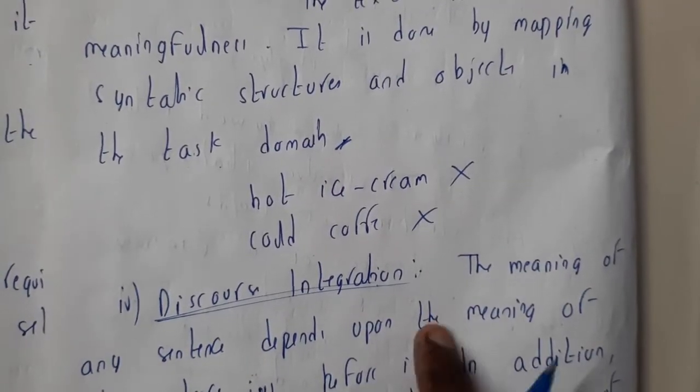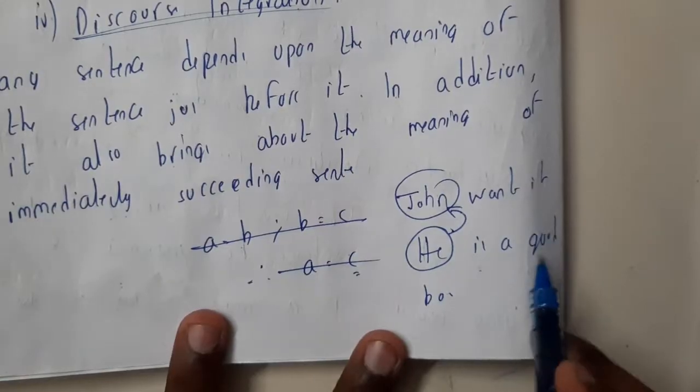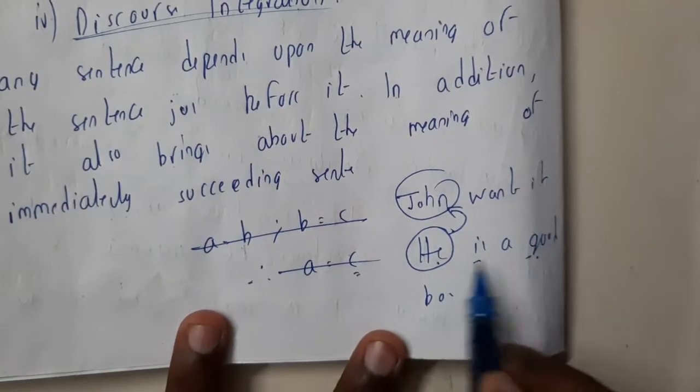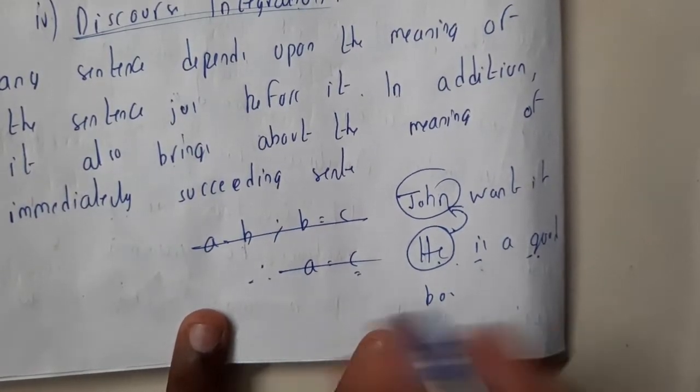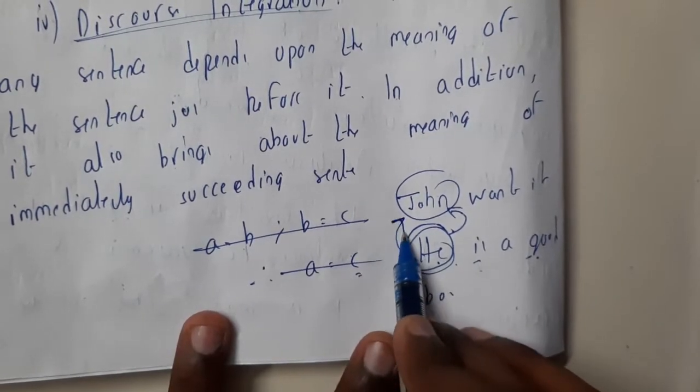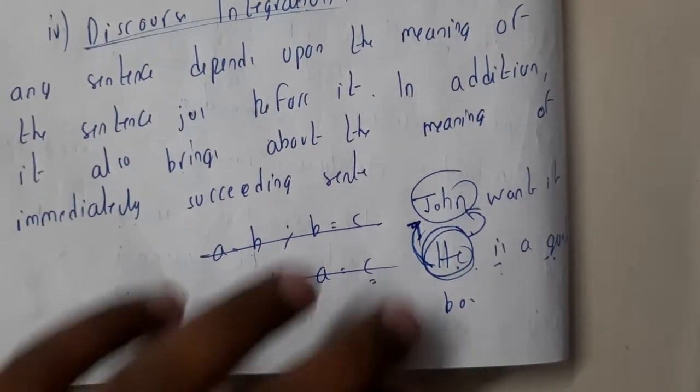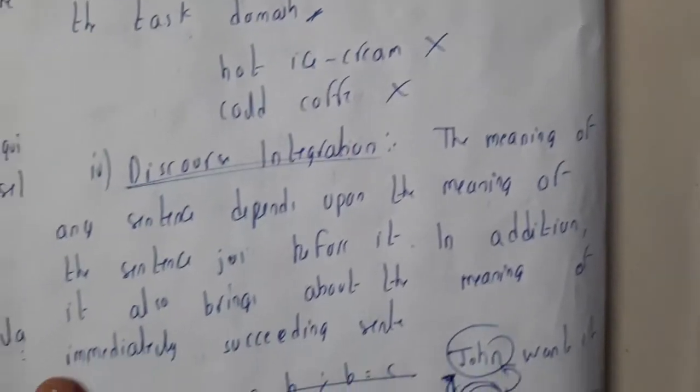Discourse integrity is nothing but—if there is a statement, let us assume 'John wants it,' so in the next statement you used 'he is a John, he is a good'—or 'he is a boy.' So in this time, the 'he' will be reflecting towards John. So the recently used person will be reflected here. So this is nothing but your discourse integrity.